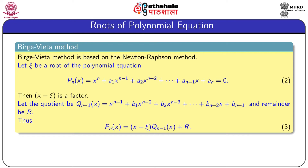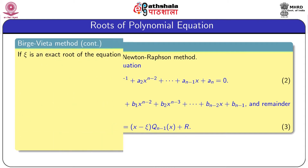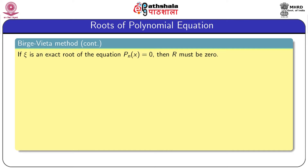If P_n(x) is exactly divisible by (x − ψ), the remainder R must be 0; otherwise R is a non-zero quantity. Therefore we can write P_n(x) = (x − ψ)·q_(n-1)(x) + R. If ψ is an exact root of P_n(x) = 0, then R = 0; otherwise R is a very small quantity close to 0. The value of R depends on the accuracy of ψ.